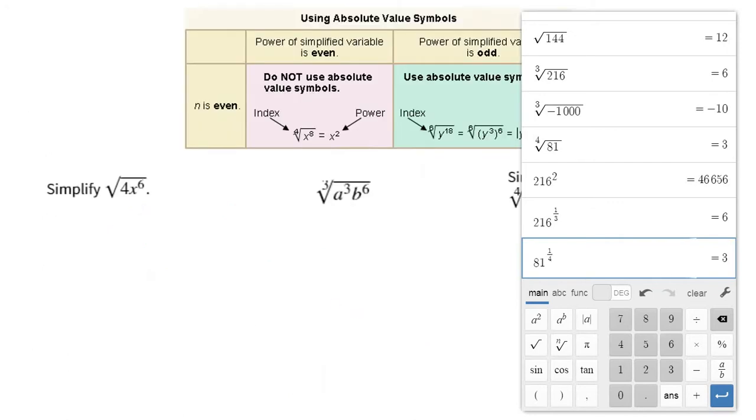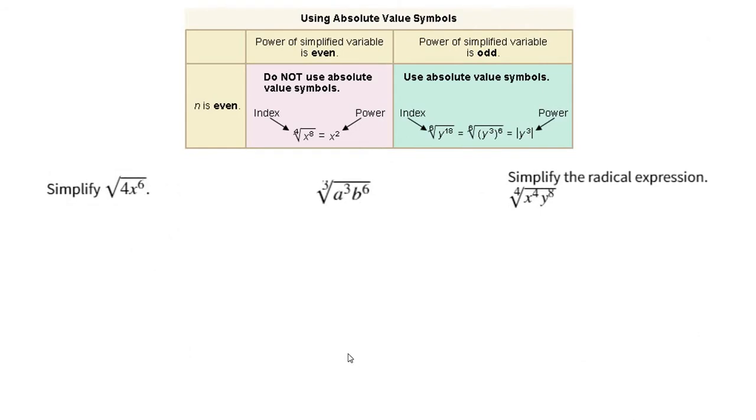Now one other thing as we go through, let me get rid of my calculator here. One other thing as we go through, we start simplifying expressions. Sometimes we need to introduce some absolute value symbols. Let me talk about that real quick example. Here's just something I'd encourage you maybe to write down. If you're doing an even root and you end up getting an answer that's even, you don't need to worry about absolute values. But if you do an even root and you get an odd power for your answer, that's where we want to use absolute value.